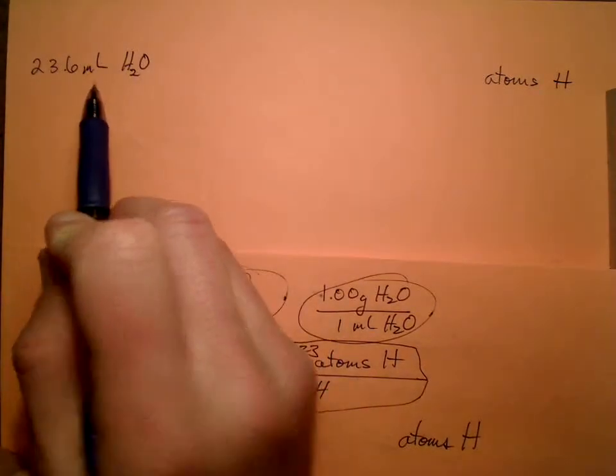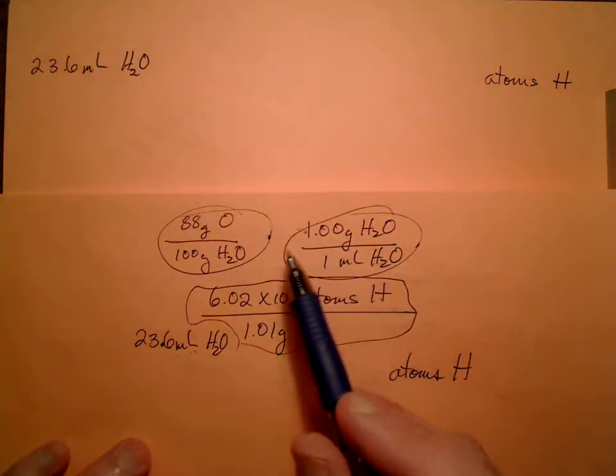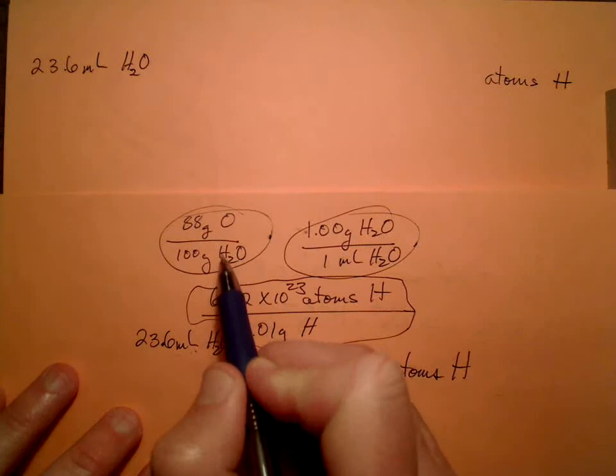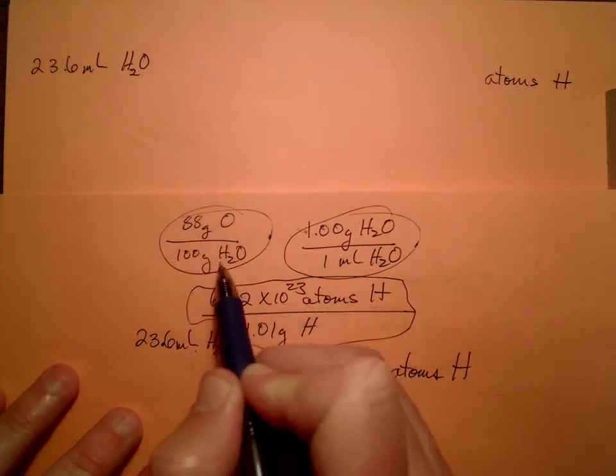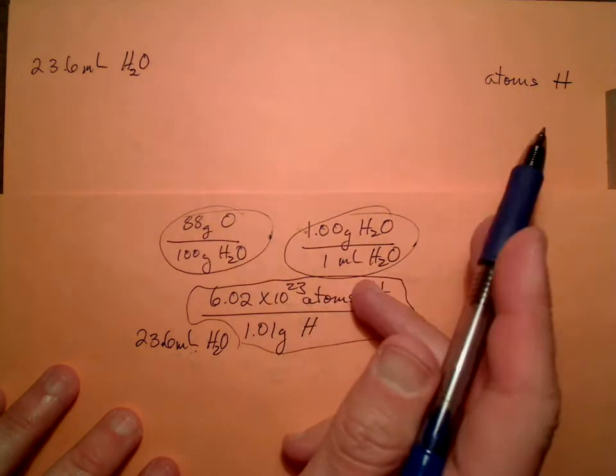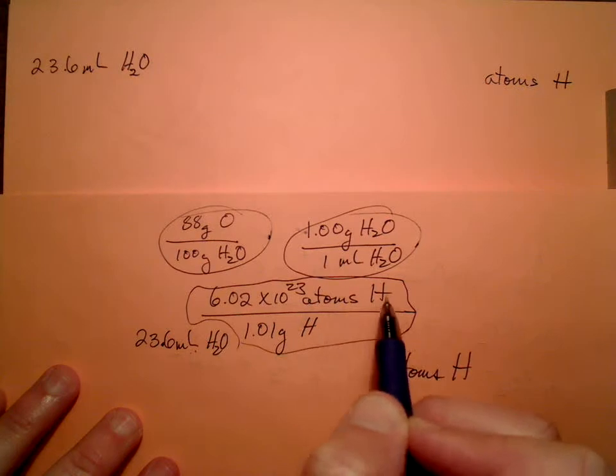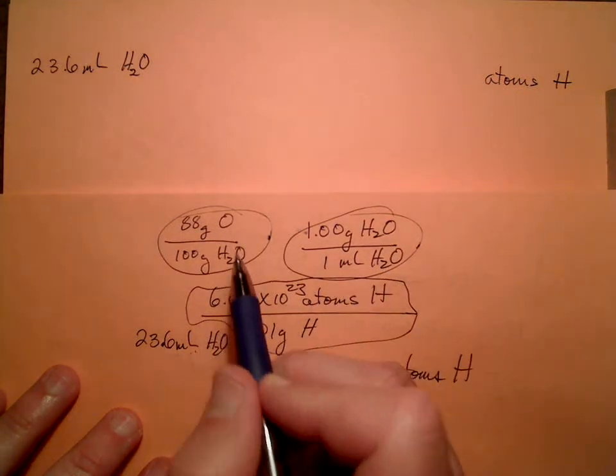So somehow we need to get from H2O to H. And we look at our conversion factors. Is there anything that has both H and H2O in it? Oh, yeah. Look at that. We have grams of oxygen, grams of water. But that's not really hydrogen. We need to get to hydrogen. This is the only thing that has hydrogen to something else. Here's something else.